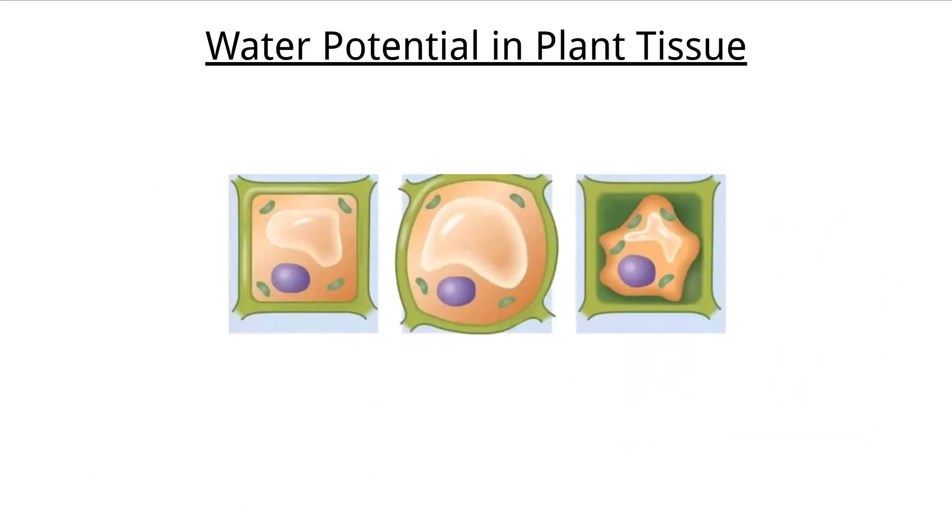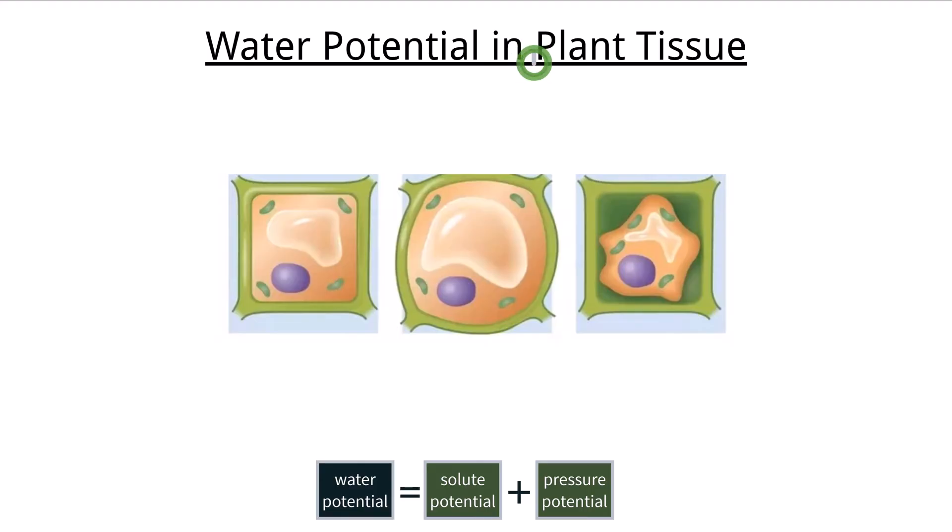We can explain the movement of water from cells within hypertonic and hypotonic solutions by using the concept of solute potential and pressure potential, and because we have those, we can use water potential, which is the sum of the two. For this example, we will focus on plant cells, as they have different pressure exerted upon them by their internal water vacuoles, which are supported by their cell walls.